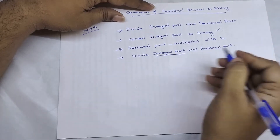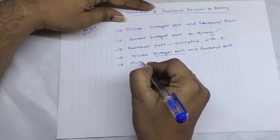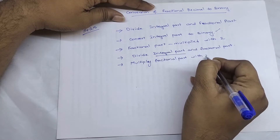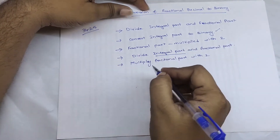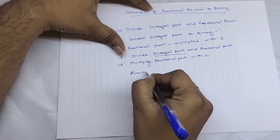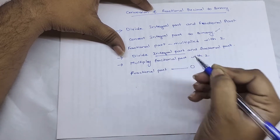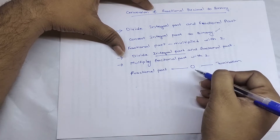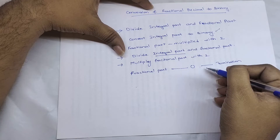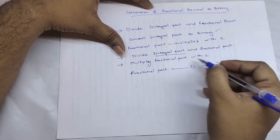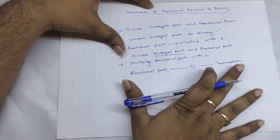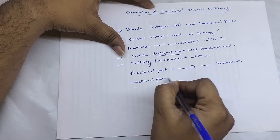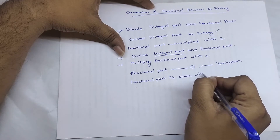In the next step, again divide the integral part and fractional part. We consider this integral part, then again multiply the fractional part by two, and repeat the same process until the fractional part becomes zero. We stop calculating once the fractional part becomes zero. However, this will not happen in all cases. In such cases, stop the procedure when the fractional part is the same as a previous result.